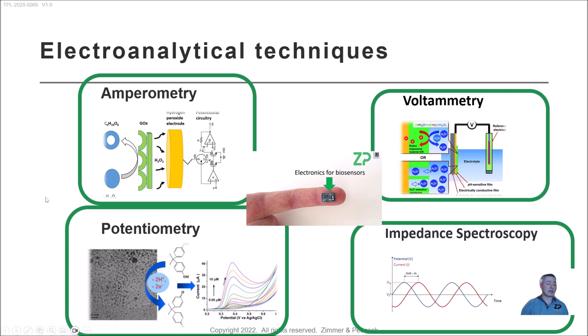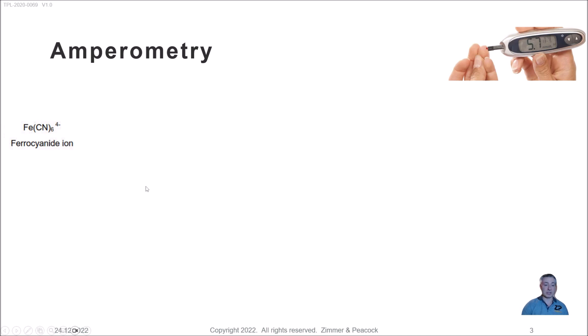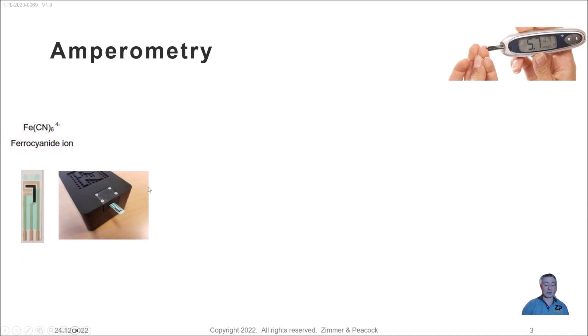In amperometry — an important technique with at least a hundred different manufacturers of glucose strips, most of which are electrochemical — they all have a charging current phenomenon. I'll give an explanation of charging current using ferrocyanide as an example. We have a solution of ferrocyanide that we might put onto an electrode system, dropping it on, and then the potentiostat will run an amperometric experiment.